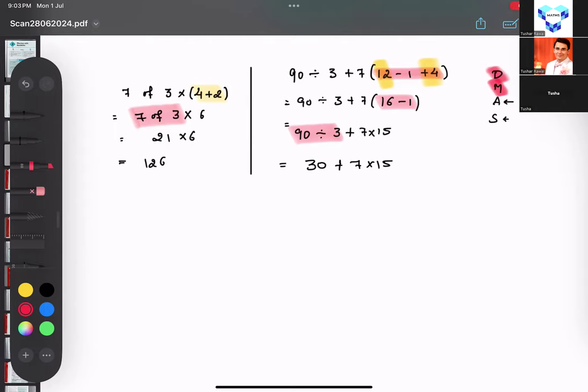Multiplication, so I will highlight the multiplication numbers. So 7 into 15, what is the answer? 35 and 105. 105, so 135.